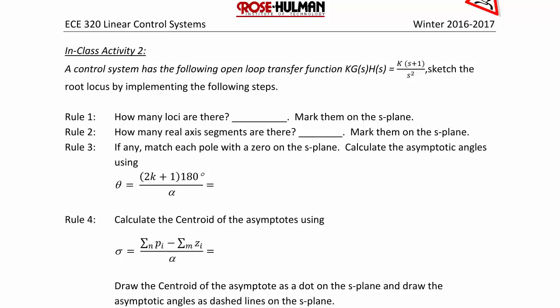Let's try our final example of today's lecture. A control system has the following open loop transfer function: KG(s)H(s) is equal to k times s plus 1 over s squared. Sketch the root locus by implementing the following steps.